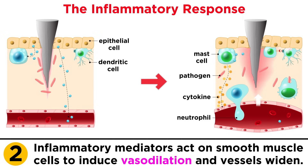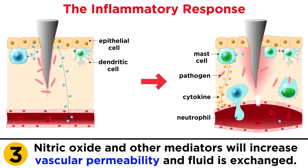The slowed blood flow helps slow the spread of the pathogen through the bloodstream, and enables immune cells in the blood to leave the circulation and enter the affected tissue. Nitric oxide and other mediators also increase vascular permeability, which we can think of as leakiness, that occurs when the normally tightly joined endothelial cells separate from each other to produce gaps. Increased vascular permeability means that fluid from the blood leaks into the tissues, and this is the cause of swelling that is often seen during inflammation. The local influx of fluid and plasma proteins like complement and antibodies helps concentrate these proteins in infected tissue.